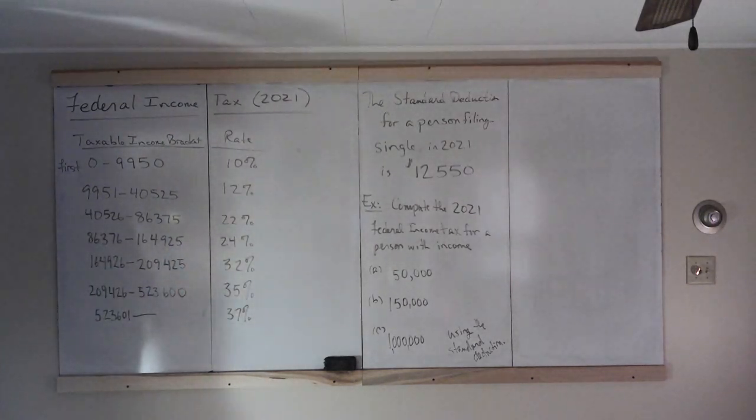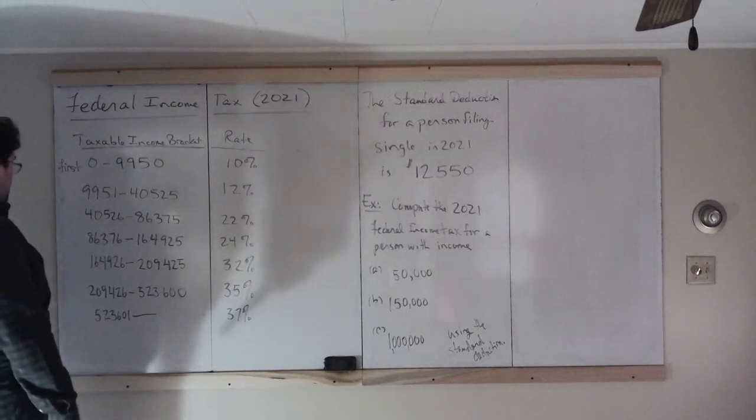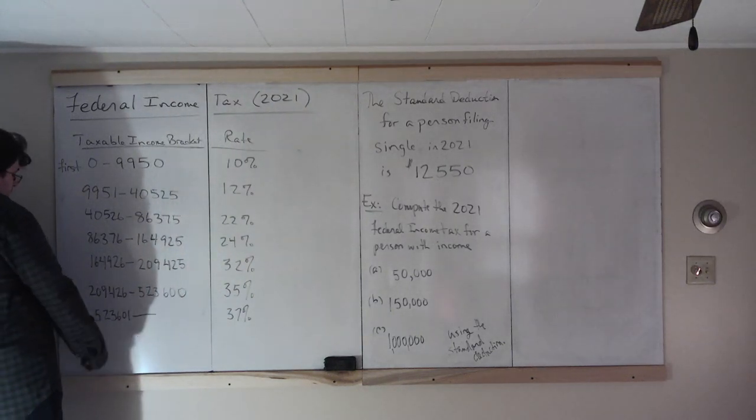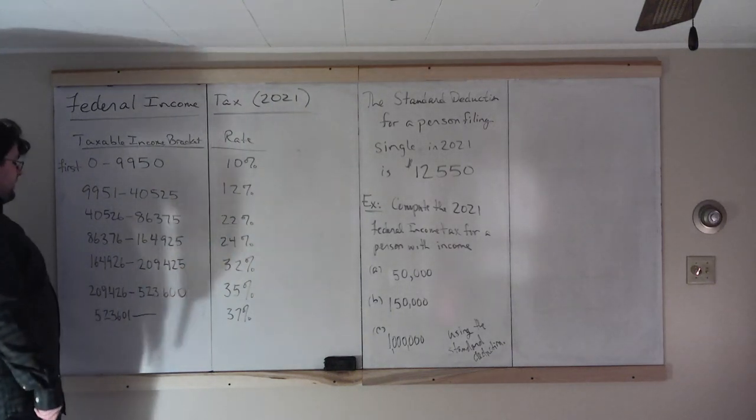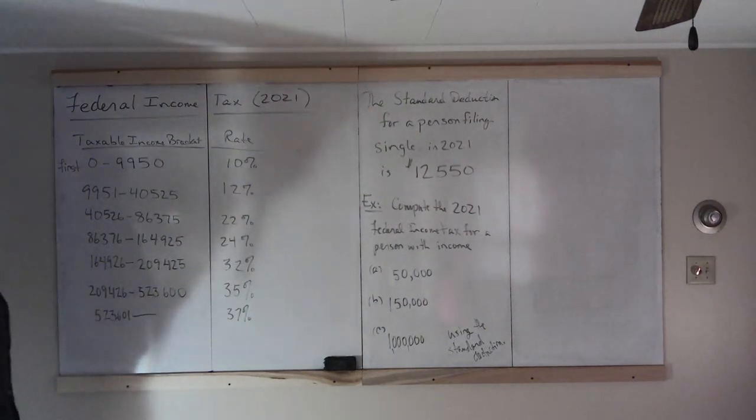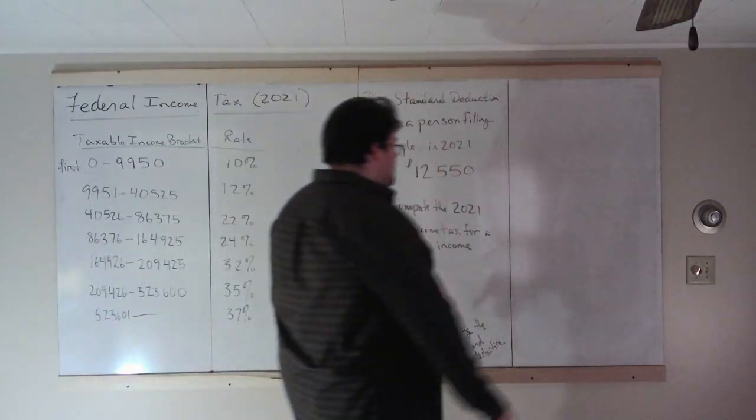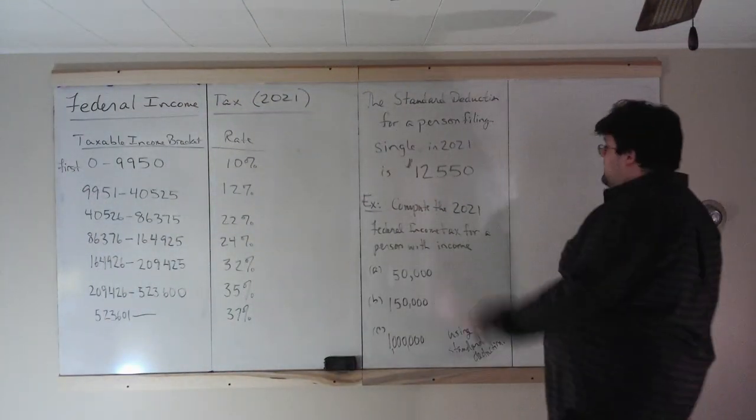These are available all over the place online for the year 2021. The last bracket, everything you earn over $523,600 is taxed at 37%. And on any test or anything, you're going to be given these numbers, and I don't expect you to memorize those.